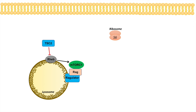RHEB is actually inhibited by TSC2, or tuberous sclerosis complex 2. Many different proteins activate and inhibit TSC2 — one of them is AMPK, AMP-activated protein kinase. AMPK actually activates TSC2, and as we know, LKB1 and AMP activate AMPK. So thinking through the cascade: LKB1 and AMP activate AMPK, which activates TSC2, which inhibits RHEB, which means that mTOR is inhibited. AMPK therefore inhibits mTOR through these couple of steps.